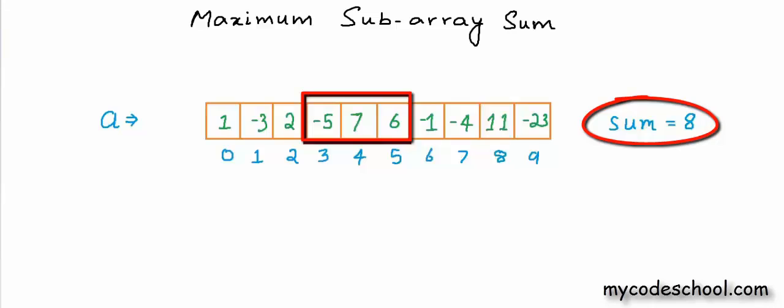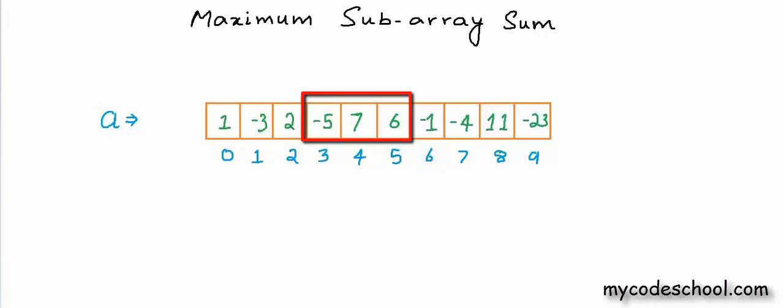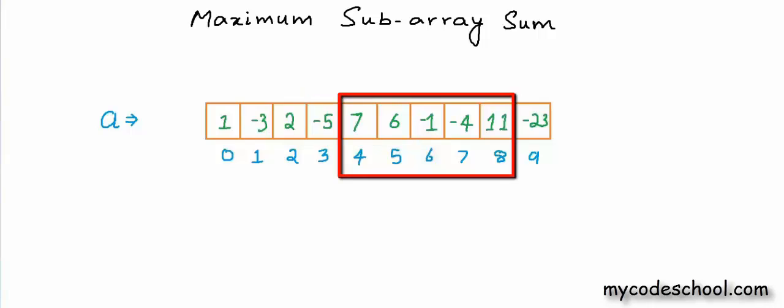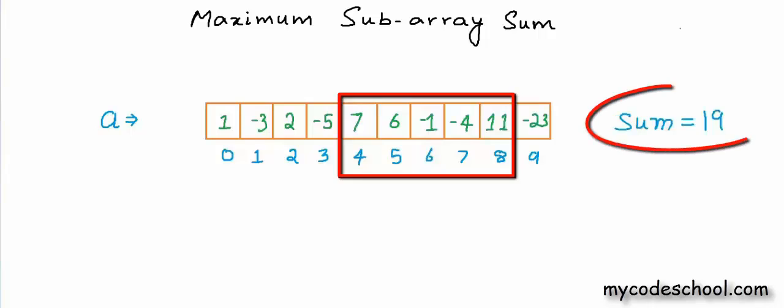In this lesson, we consider subarrays to have at least one element. The subarray that would give the maximum sum is from 7 to 11, with a sum of 19.